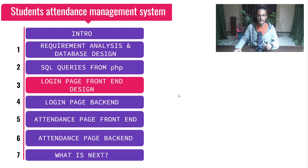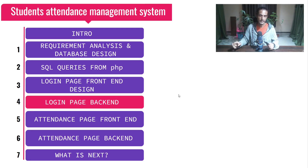Chapter three is going to be quite interesting because we'll do some visual work — building the front-end login page using HTML, CSS, and a bit of JavaScript. Then in chapter four I'll show you how to connect the front-end login page with the backend server: how to pass information such as username and password from the client side to the server side, how to extract and process the information, and how to send a response back to the client.